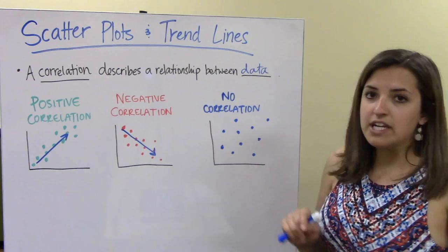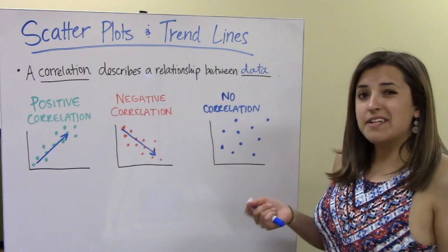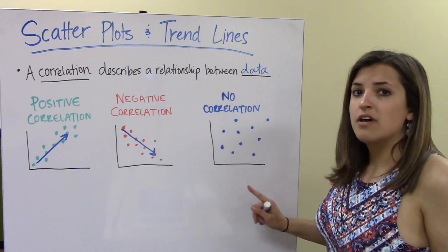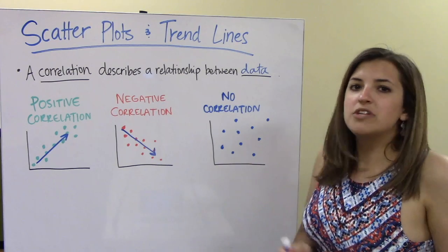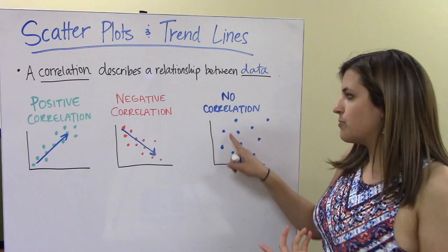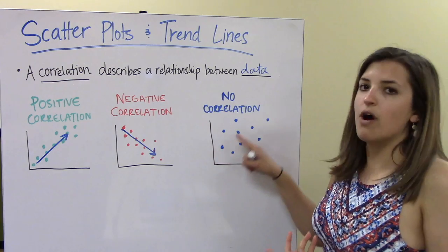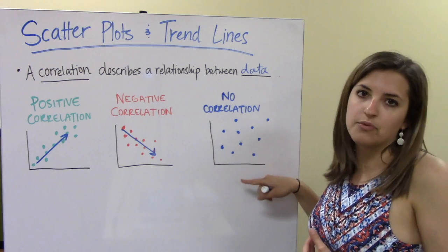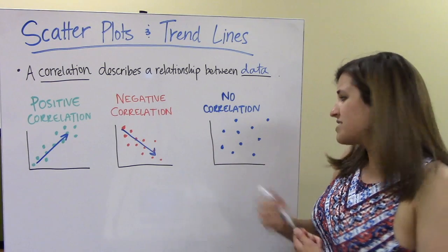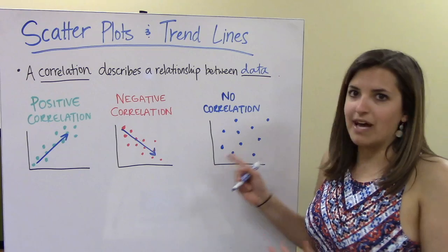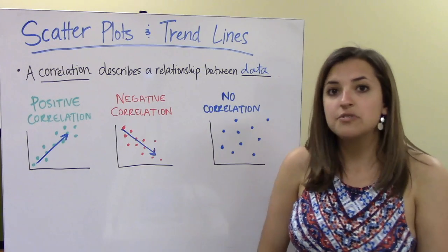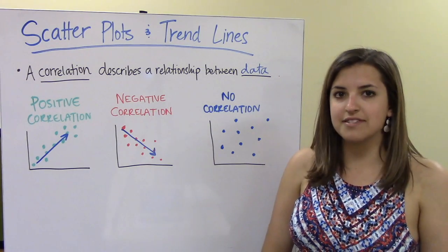With no correlation, as x moves up there's no telling where y is going to go. We can't predict if y is going upwards or downwards as x increases, so it kind of looks like a big mess — there's no trend. Let's do some problems with these.